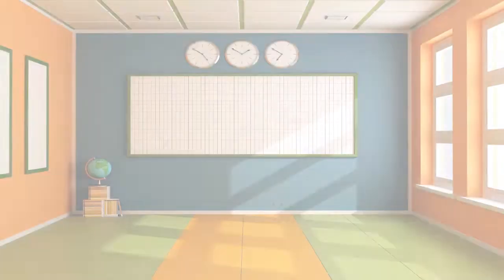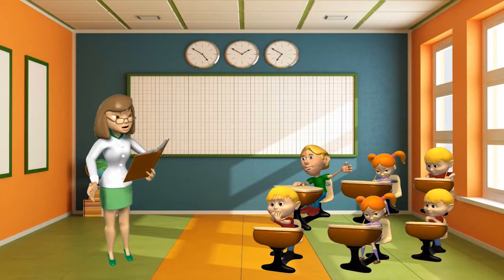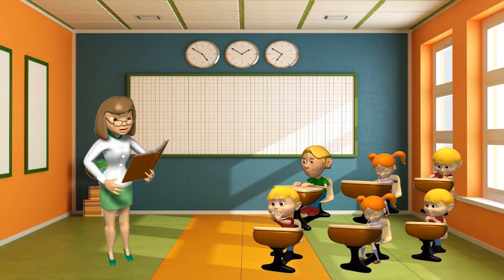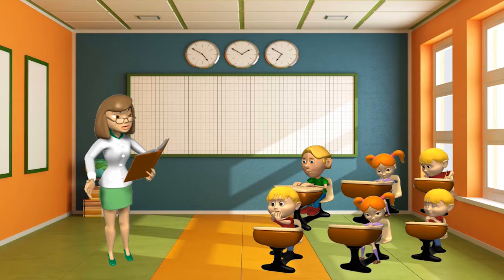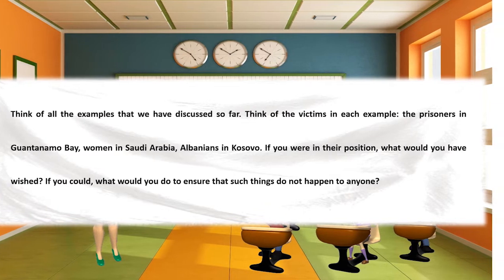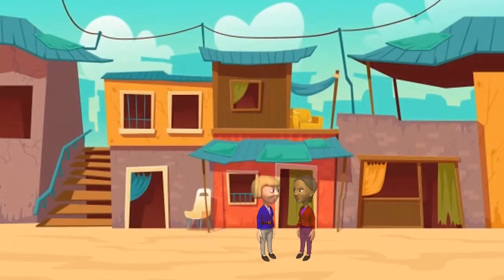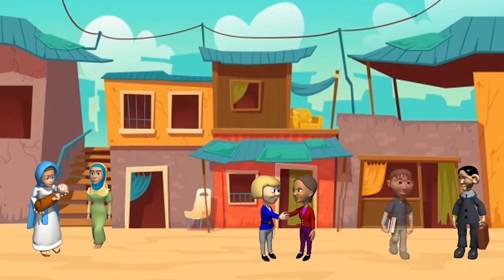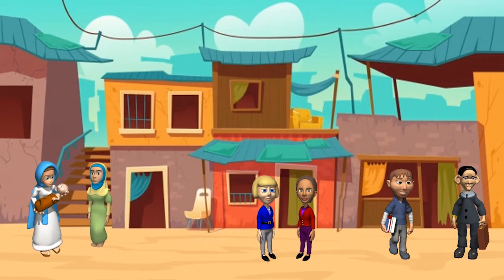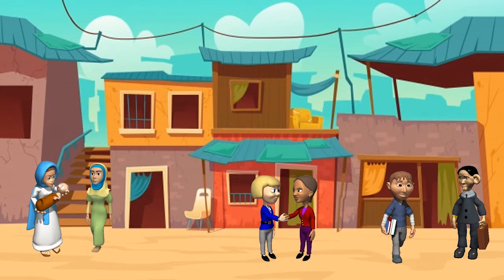Let's move on to the part of rights and democracy. Students, if you were in the same situation as those people during the Kosovo massacre or as prisoners of Guantanamo Bay, what would you do? Here comes the concept of what constructs a democracy. The main thing that builds a democracy is the rights of the people in it. A person always expects justice, security, and a basic amount of dignity for themselves.